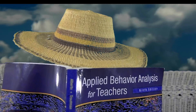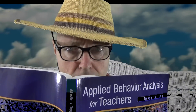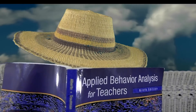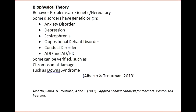I got out a textbook called Applied Behavior Analysis for Teachers by Alberto and Troutman. I learned a lot from that book, including a little something called biophysical theory. Behavior problems are caused by genetic and hereditary sources. Some disorders have genetic origin, like anxiety disorder, depression, schizophrenia, oppositional defiant disorder, conduct disorder, and even ADD and ADHD. That's it — there must be some sort of genetic link.